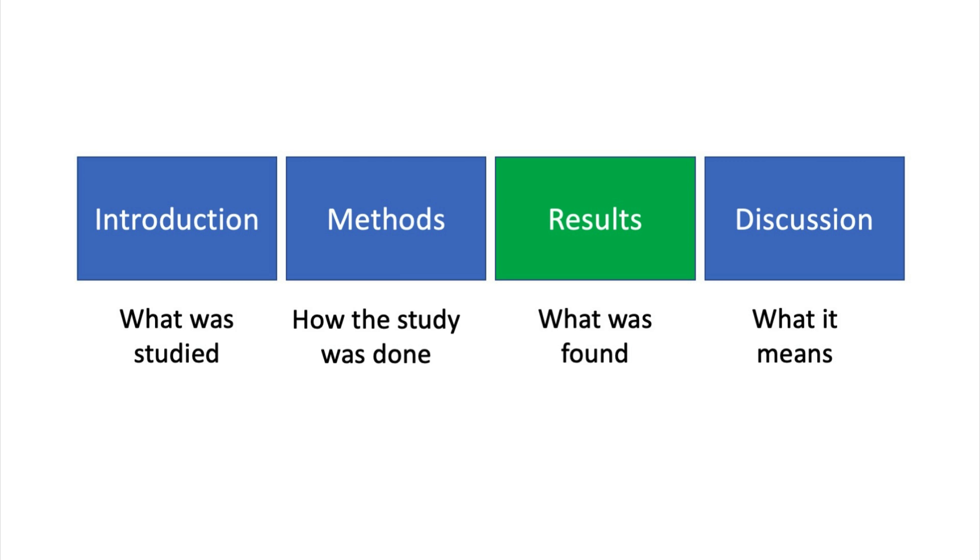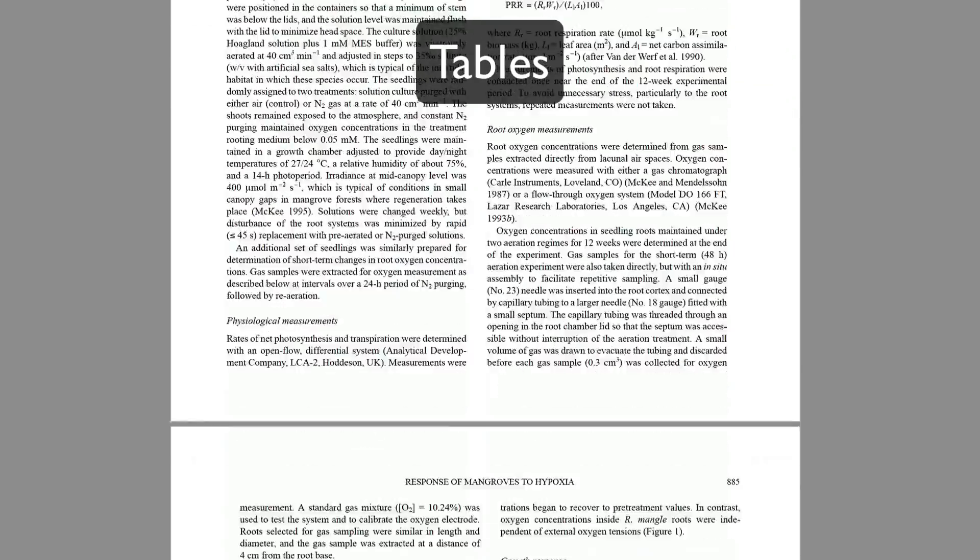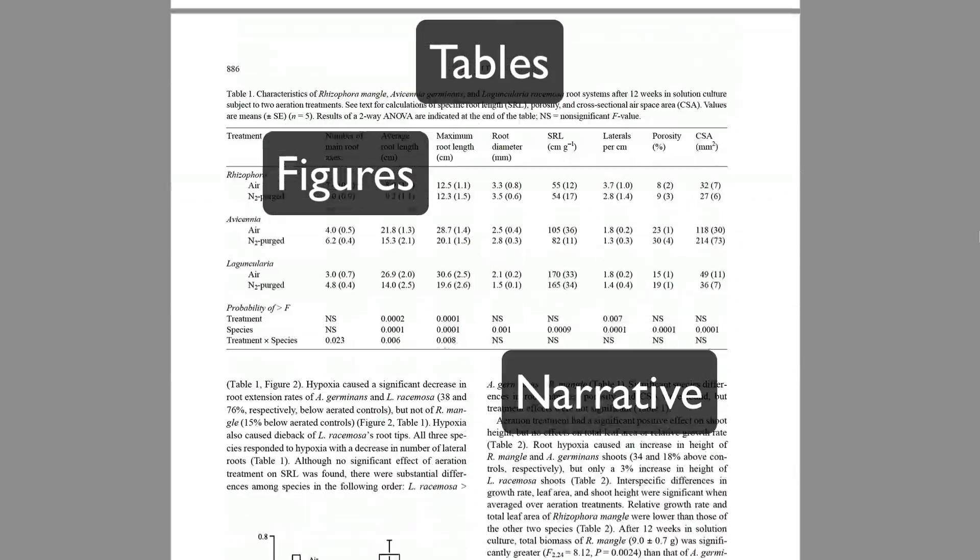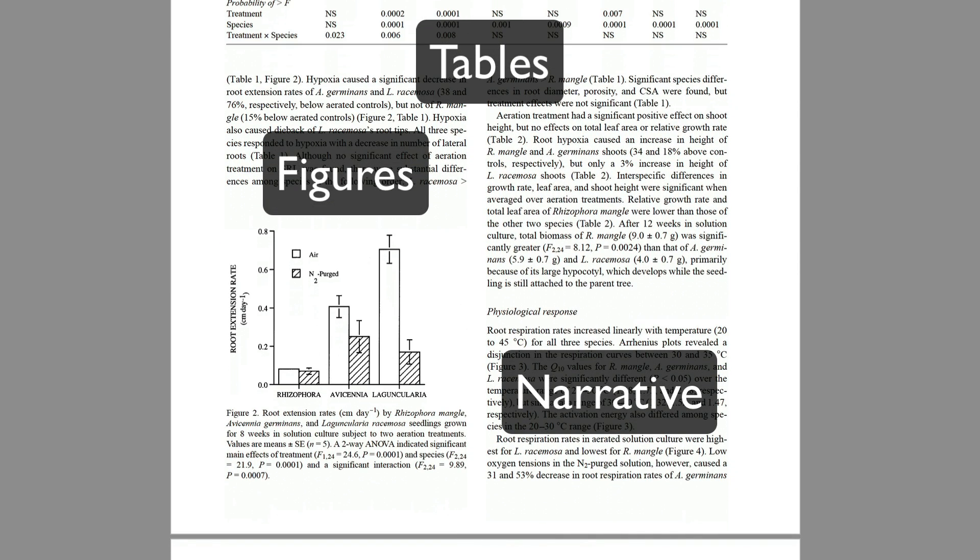The results section contains the results of experiments and other data such as a field survey. The results are summarized in tables, illustrated in figures, and described in the narrative. You will prepare your tables and figures first and then write the text.